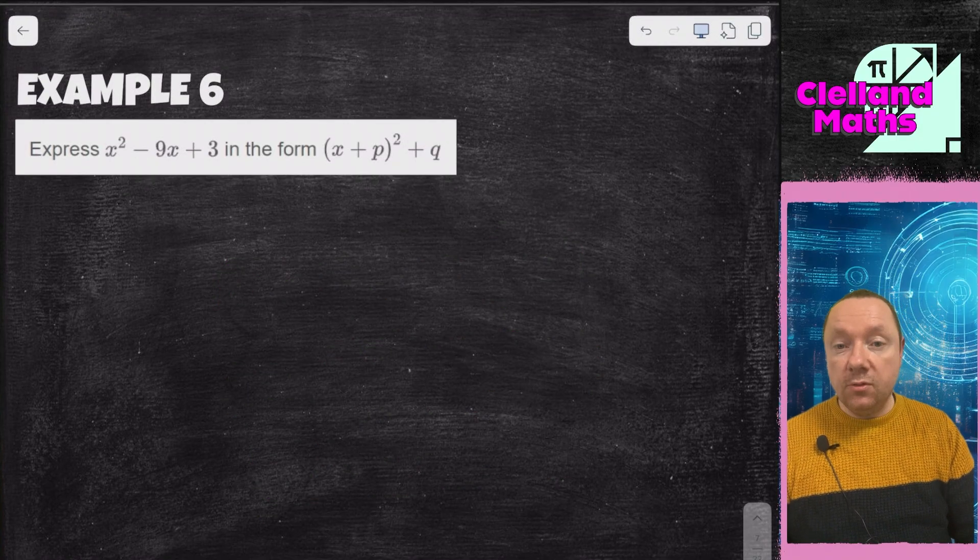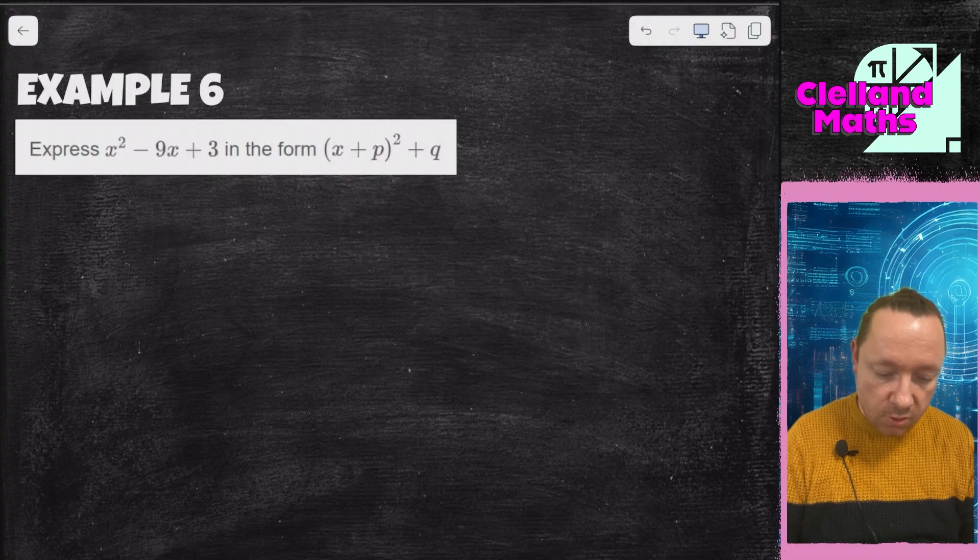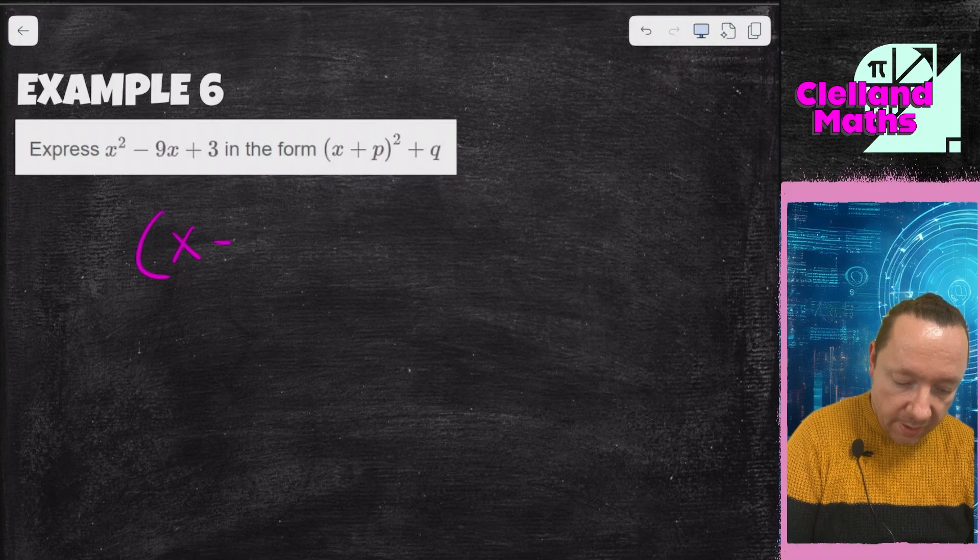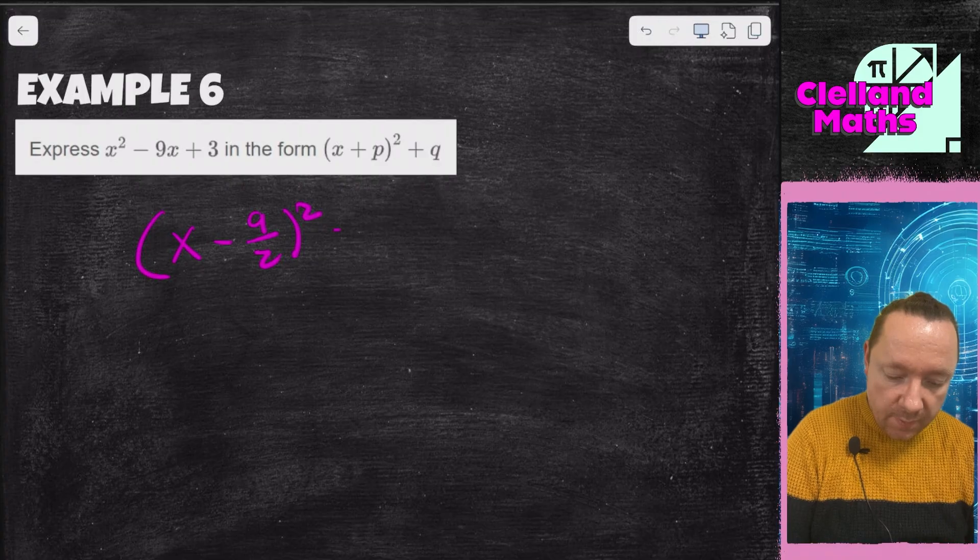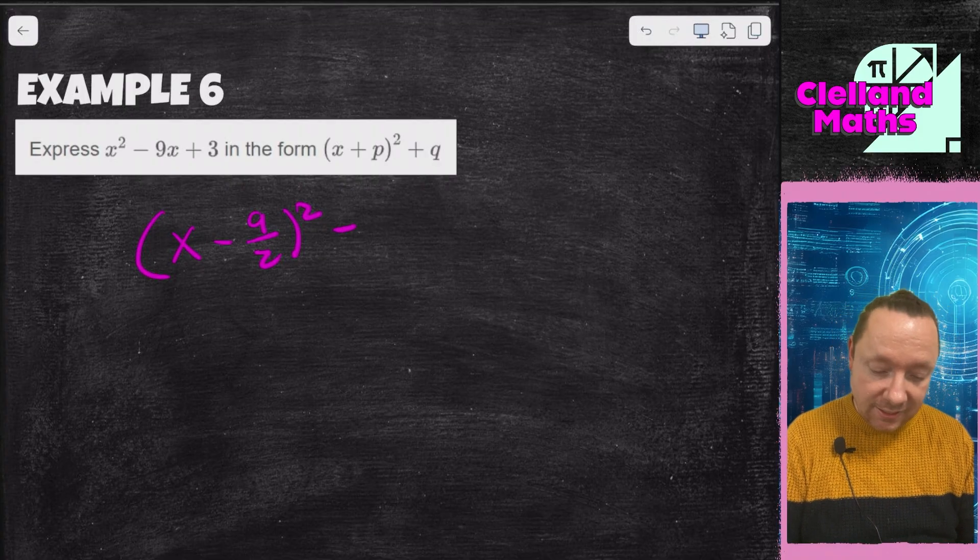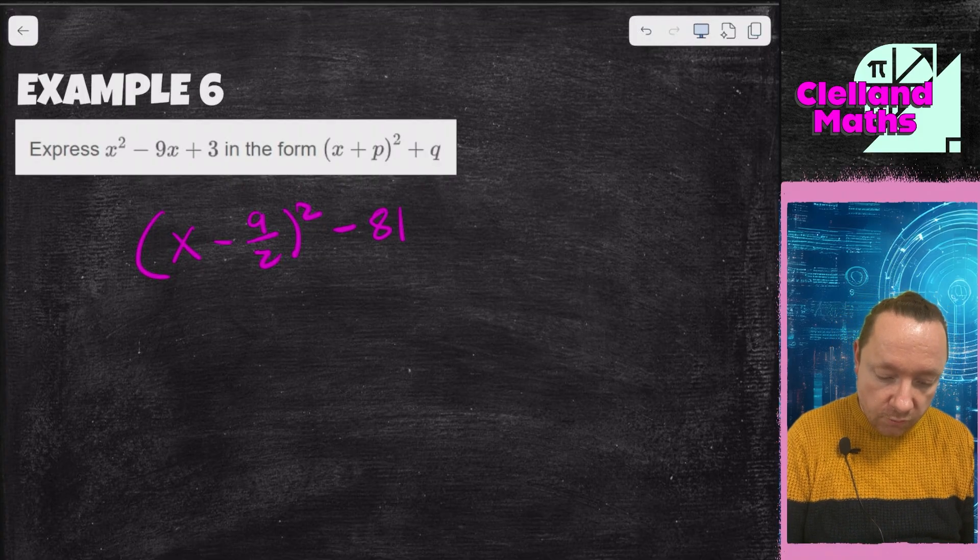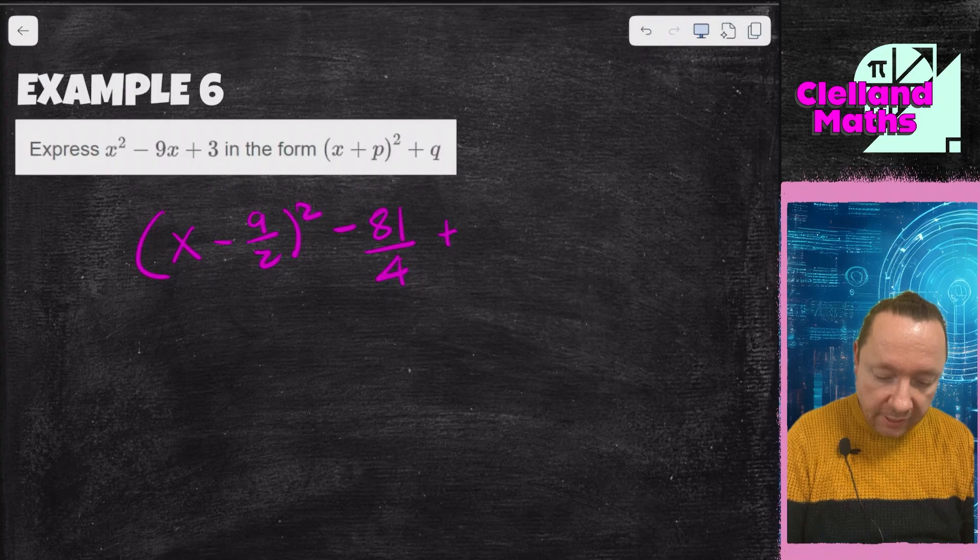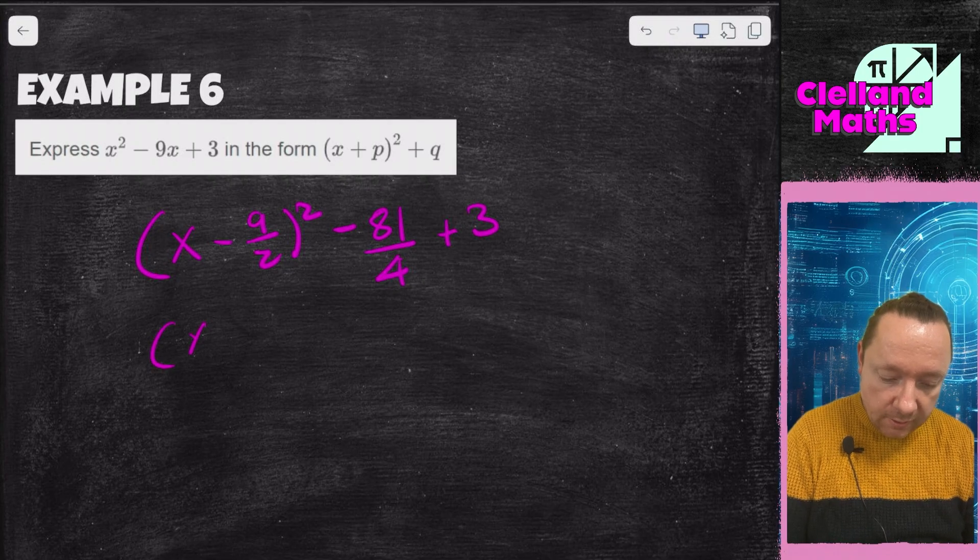x squared minus 9x plus 3 in the form x plus p squared plus q. So we've got x minus 9 over 2 squared. Immediately take away that squared, so 9 times 9 is 81, 2 times 2 is 4, but I have to add 3. Well, how do I add 3 to a fraction?